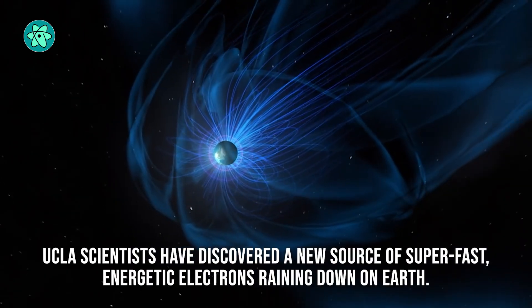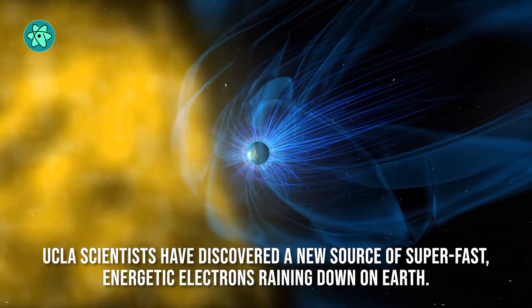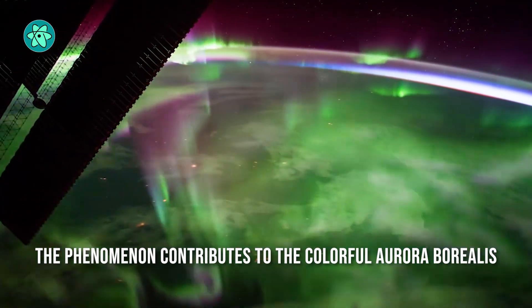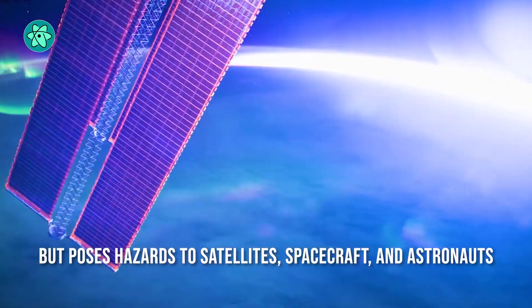UCLA scientists have discovered a new source of superfast energetic electrons raining down on Earth. The phenomenon contributes to the colorful aurora borealis that poses hazards to satellites, spacecraft, and astronauts.